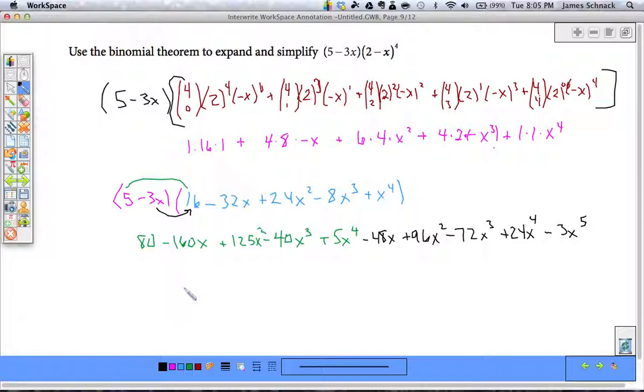And last, all we have to do is combine our like terms. So we have 80. I have x terms in two places. Negative 160 minus 48 is negative 208x.